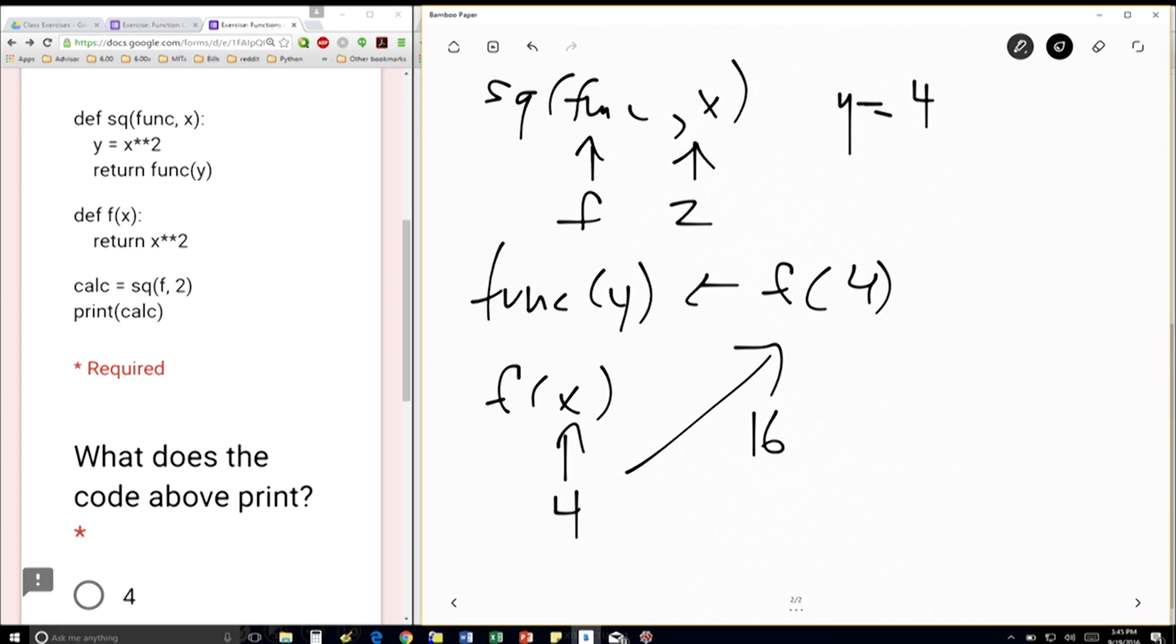So f of 4 gets replaced with 16. And f of 4 was up here, right? We're just popping out of scopes now. So f of 4 was up here. So then this, that line there, return func y, is going to return 16.